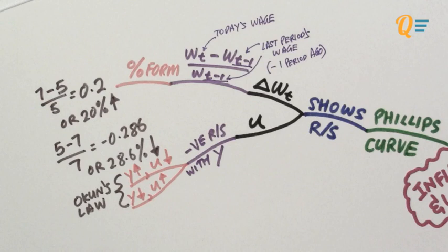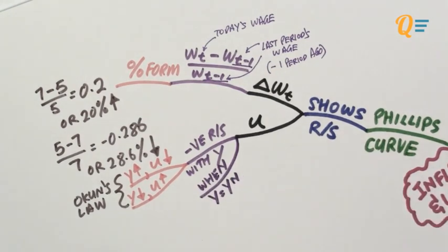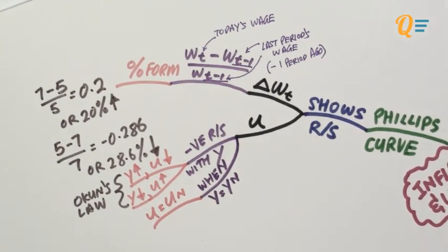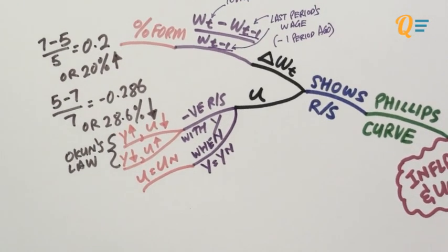Obviously, when income falls and the economy goes into recession, that's where firms lay off workers and you get a lot of unemployment. Just like there is a natural rate for the output level, there is also a natural rate for the unemployment level — the natural rate of unemployment. There's even a fanciful name for it: the non-accelerating inflation rate of unemployment, or NAIRU for short. You can use the term NAIRU to describe the natural rate of unemployment.